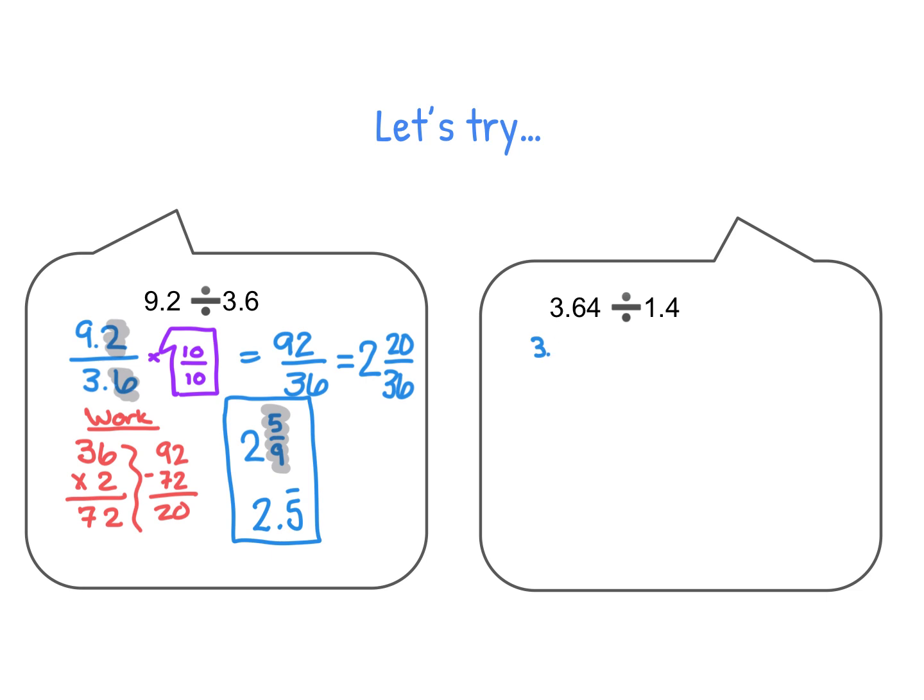We're going to take 3.64, and that will become our numerator, all over top of 1.4. You can see that I've been very careful to line up my numbers. And this is the case where I have to add that 0 so that I have equivalent zeros for each of my fractions. I have 2 and I have 2, which is exactly what I want, which means that my giant 1 is going to end up being 100 over 100. So we want to multiply by 100 over 100, remembering that anything over itself is equal to the value of 1, which does not change anything that we're doing.